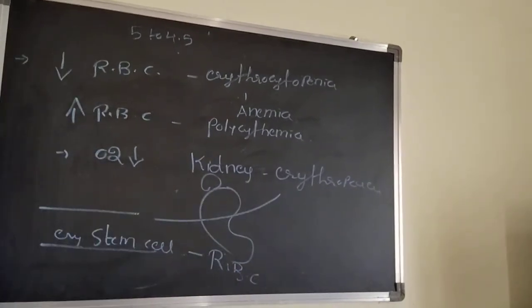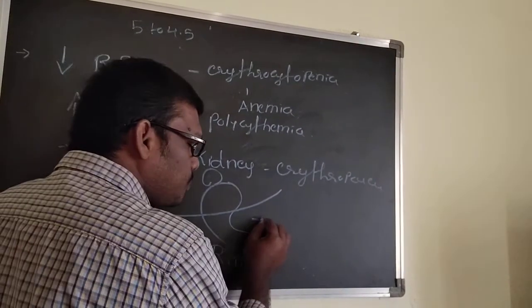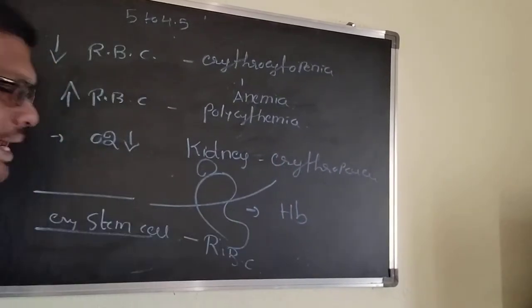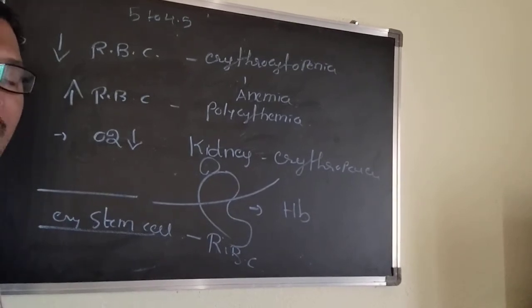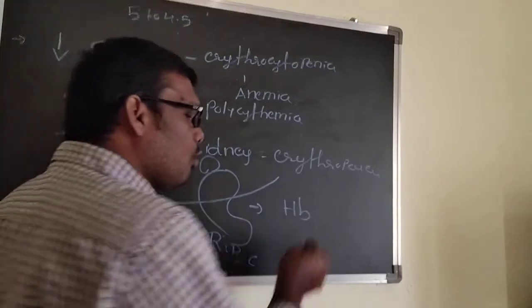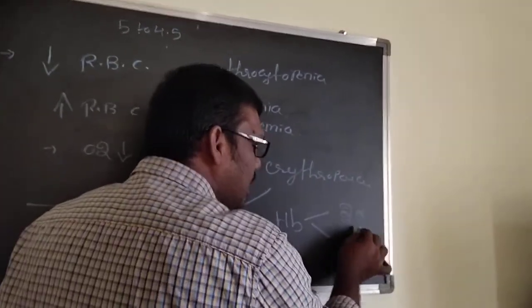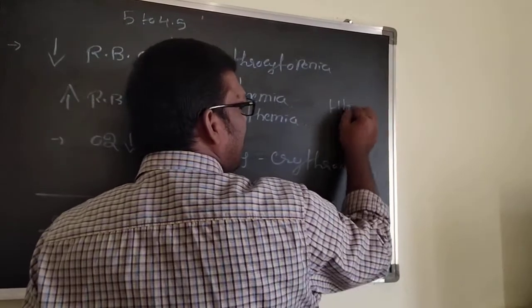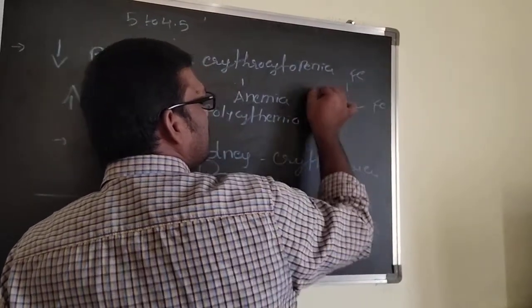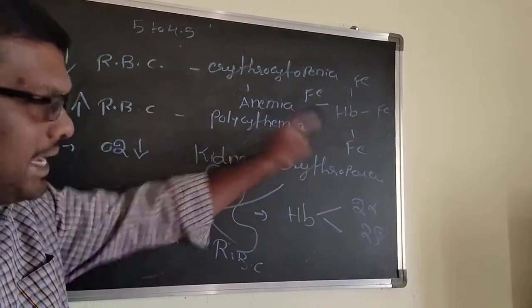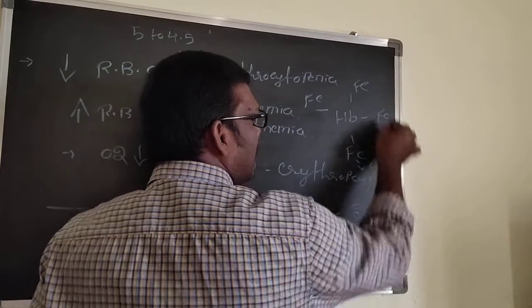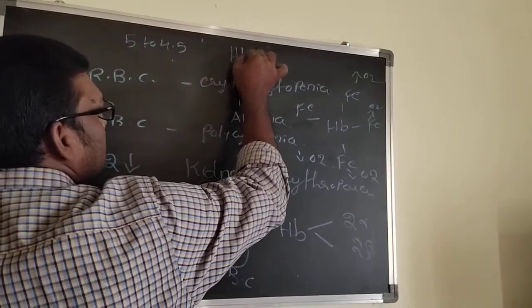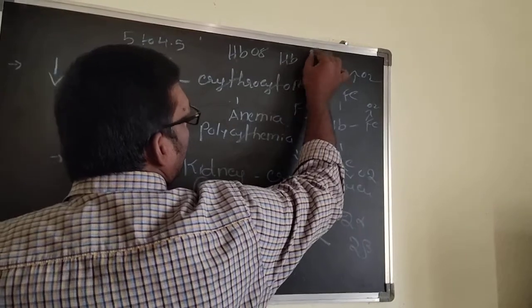When RBC is produced, it contains a respiratory pigment called hemoglobin. Hemoglobin carries oxygen to all parts of the body. Hemoglobin has four chains — two alpha chains and two beta chains. It has four heme ions, and each ion can carry one oxygen molecule, so you can write HbO2 × 4 or HbO4·2.